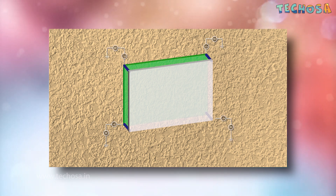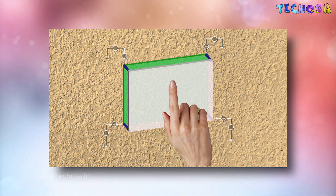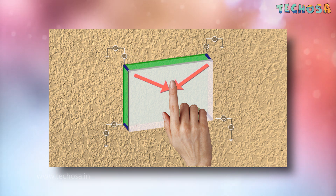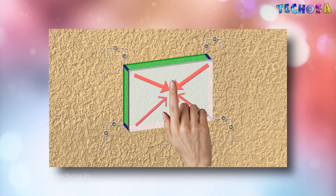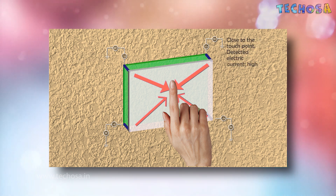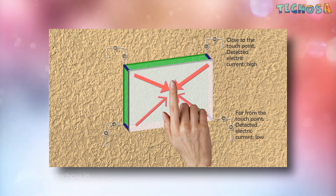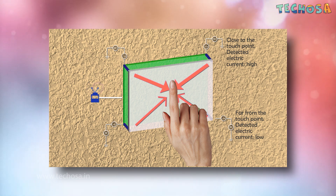When an exposed finger touches the monitor screen, it reacts to the static electrical capacitance of the human body. Some of the electrical charge transfers from the screen to the user. This decrease in capacitance is detected by sensors located at the four corners of the screen, allowing the controller to determine the touch point.